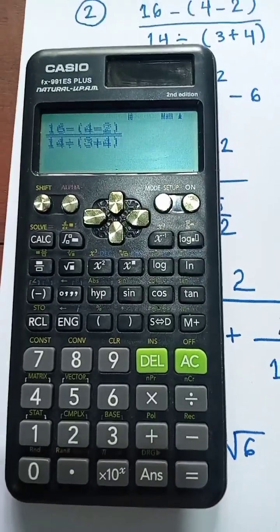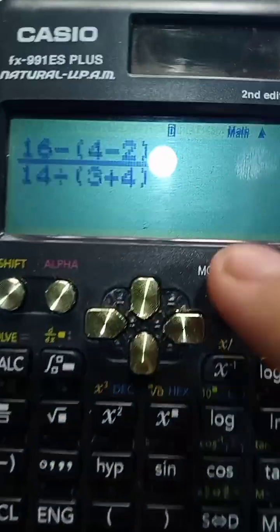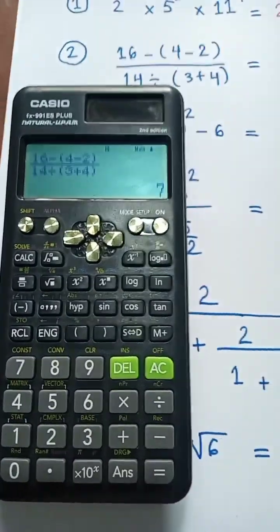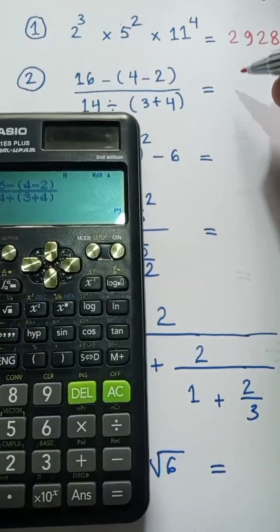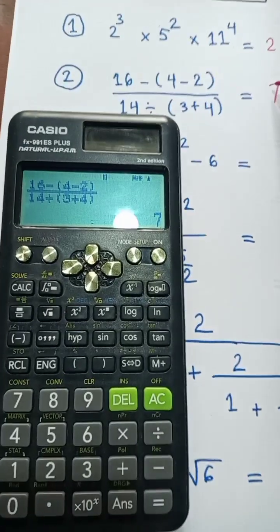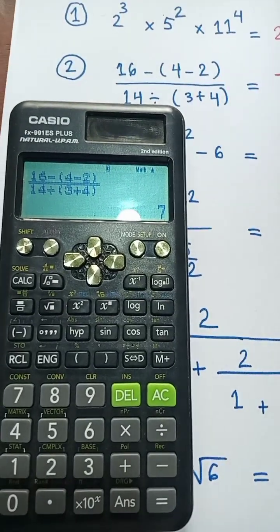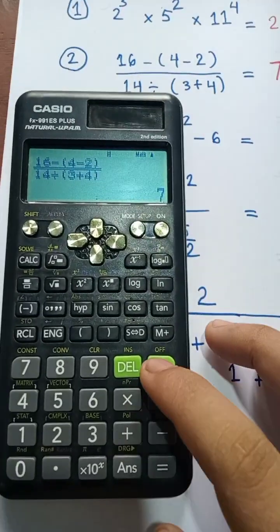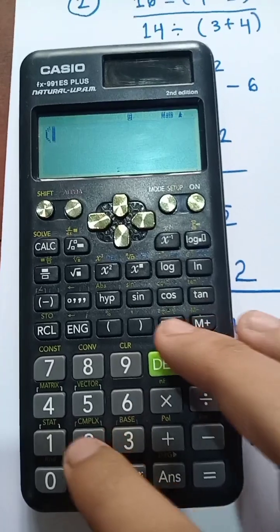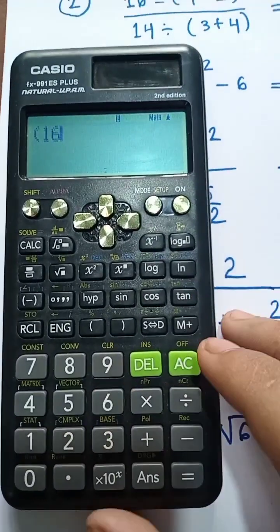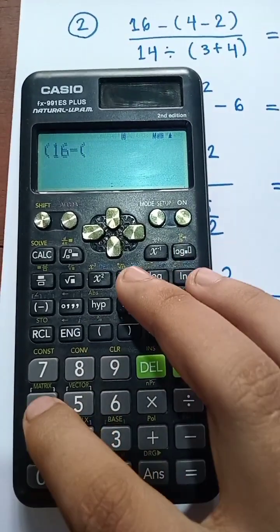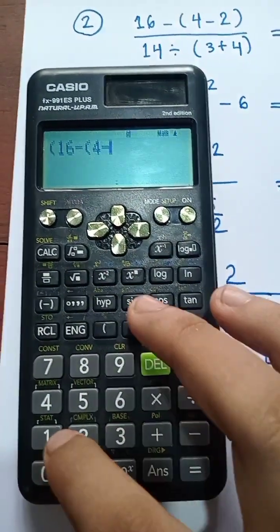This is a 3,000 square. Here it is the 4,000 square. Now let's get the 4,000 square and take a look at the two digits. 16 minus 4 minus 2.